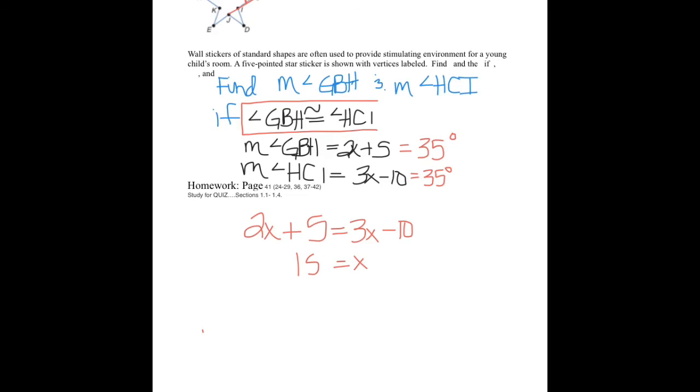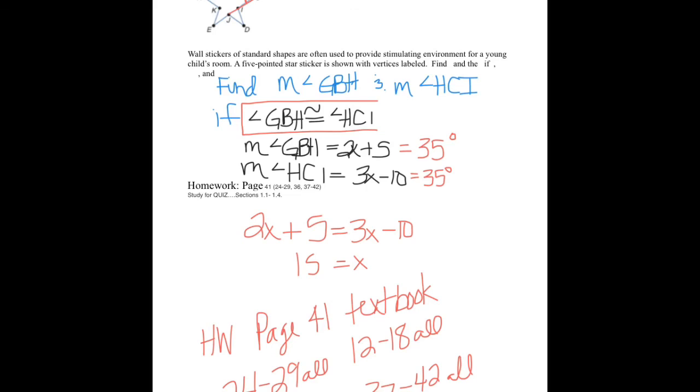So our homework is on page 41 of your textbook. You are going to do 12 through 18, all, 24 through 29, all, and 37 through 42, all. And this is actually typed in your Canvas module.